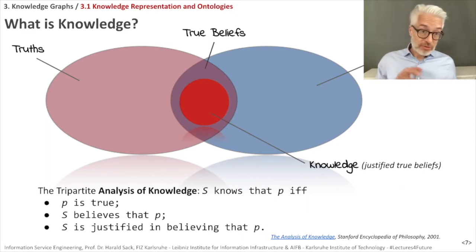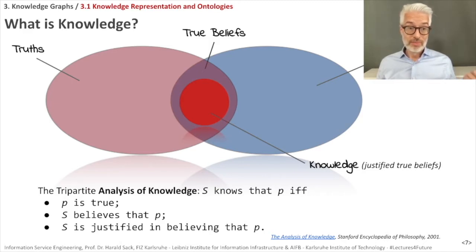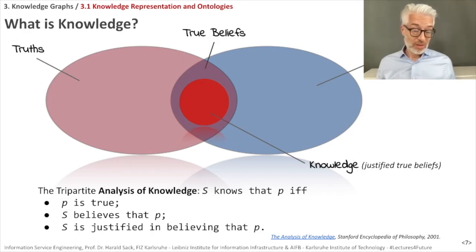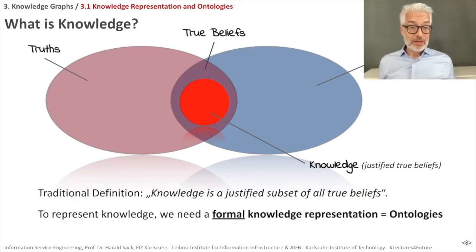We can formalize this with the help of mathematical logic in the so-called tripartite analysis. An individual S knows that P is true if and only if: P is really true, S believes that P is true, and S is justified in believing that P is true. Only then can we say P is part of our knowledge.